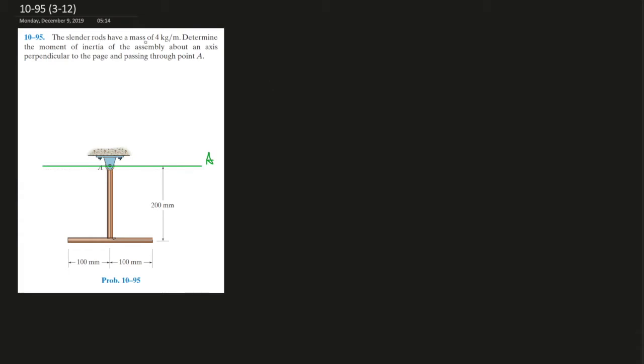The slender rod has a mass of 400 kilograms per meter. Determine the moment of inertia of the assembly about an axis perpendicular to the page and passing through point A. What it's really saying is the page is going this way, so the perpendicular would be a horizontal axis at A that crosses over A.